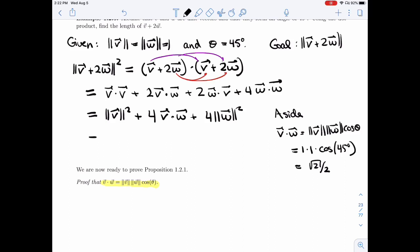And so here I get 1 squared plus 4 root 2 on 2 plus 4 times 1 squared. So I get 5 plus, I'm going to simplify the 4 and the 2, so 2 root 2.